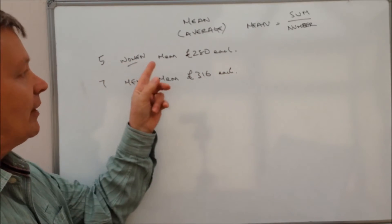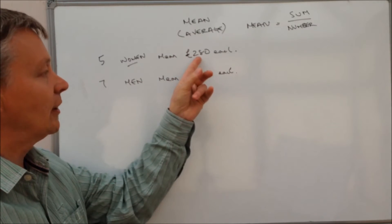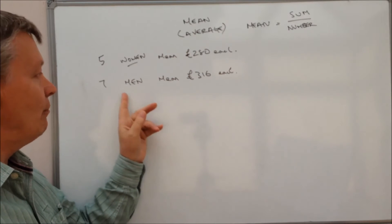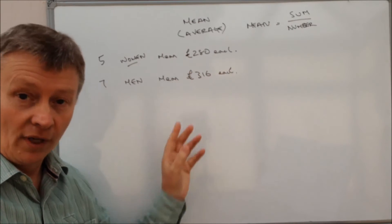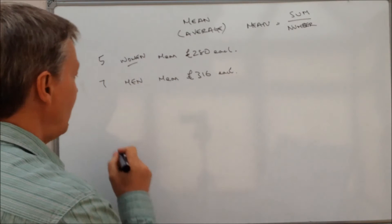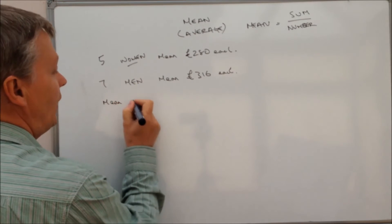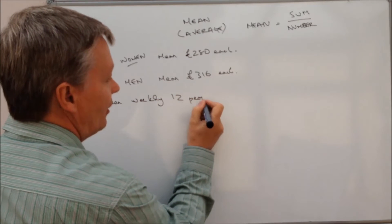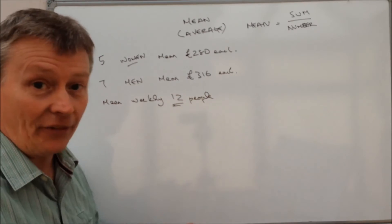So the five women, they get 280 pounds each on average. Some women will earn a little bit more, some women a little bit less. And what we need to do to answer the question is find out the mean weekly wage for all 12 people. In other words, what's the average for the women and the men together?